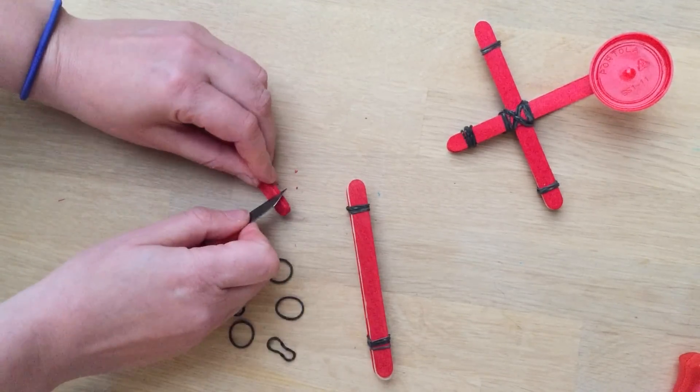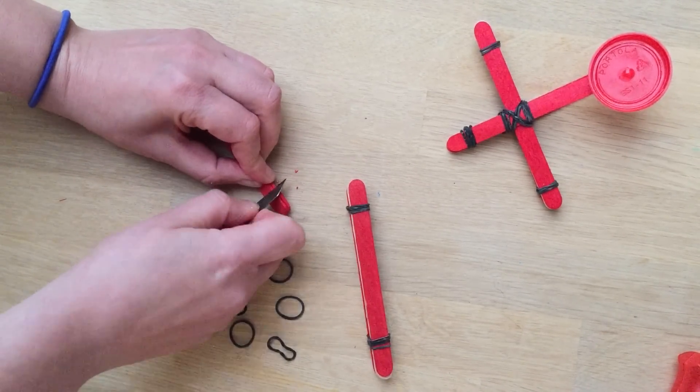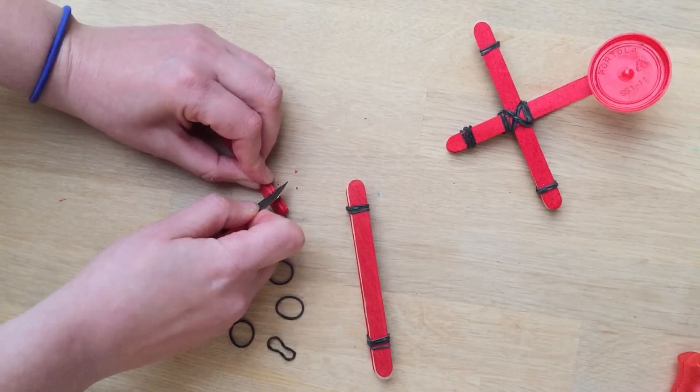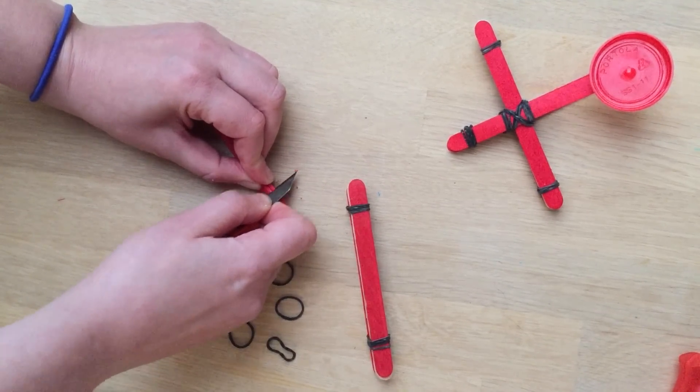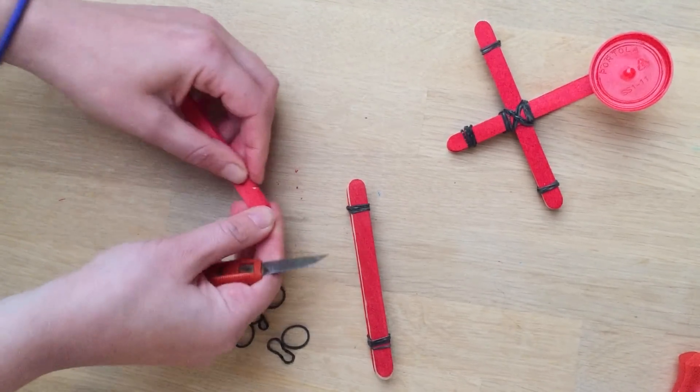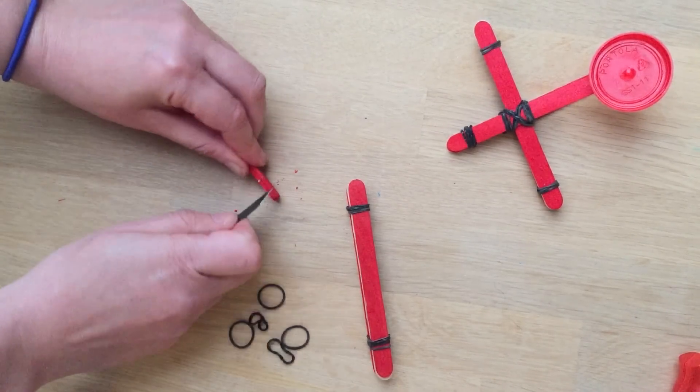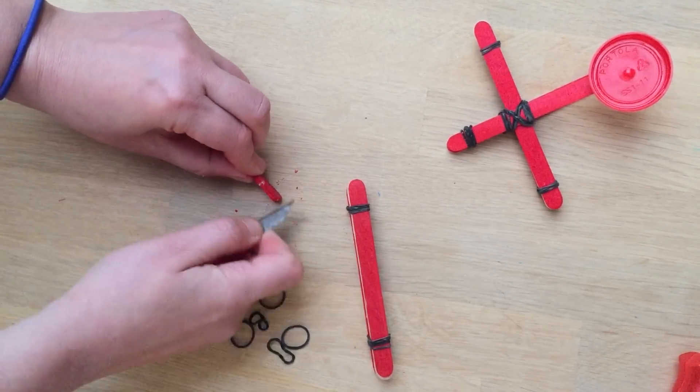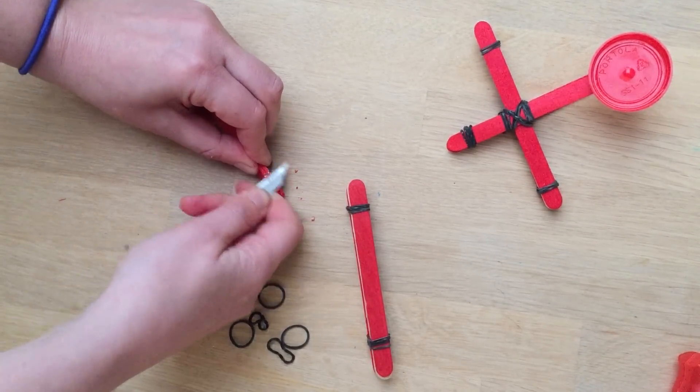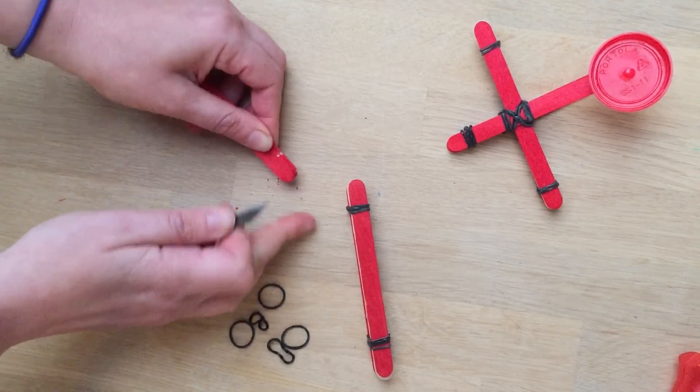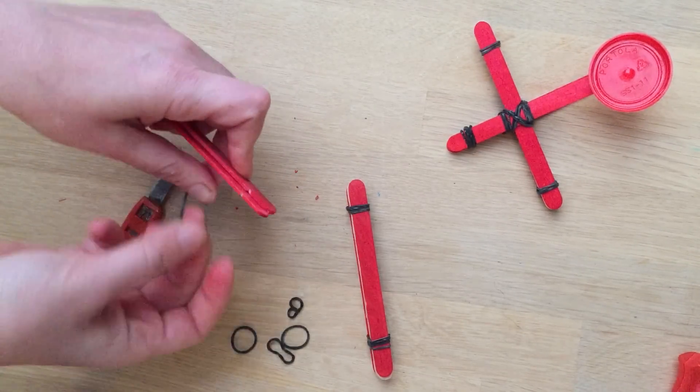They don't have to be very deep, but just enough to catch the loom bands. There we go. And then try and get them in exactly the other side. Again, as you're using something sharp, I've got a Stanley knife here, be careful. This is like the trickiest bit to be honest. A lot of people actually don't even do this step.